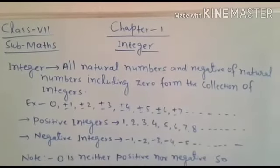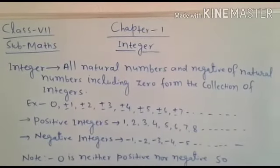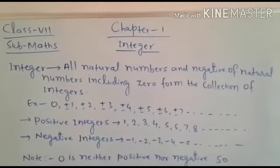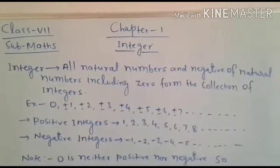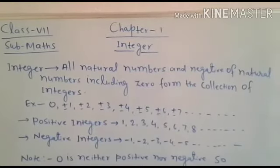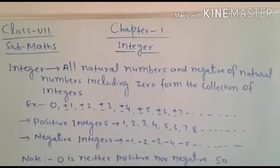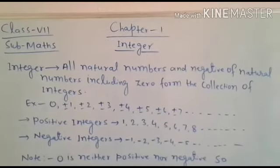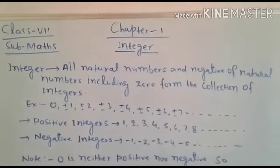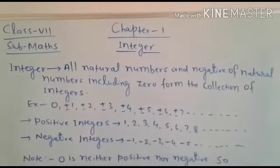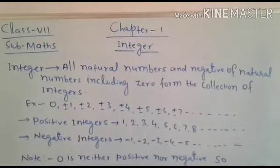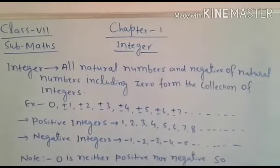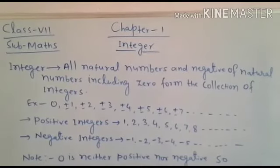So in integers, we have positive and negative integers. Positive integers are one, two, three, four, five, six, seven, eight and so on. And what about negative integers? Negative integers contain a negative sign — it means minus one, minus two, minus three, minus four, minus five and so on.